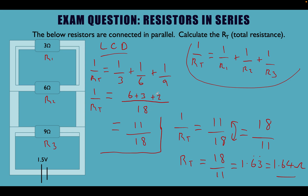We found the lowest common denominator was 18: 9 goes into 18 twice, 6 goes into 18 three times, and 3 goes into 18 six times. So 1 over Rt equals 6 plus 3 plus 2 over 18, which simplifies to 11 over 18, since 6 plus 3 plus 2 equals 11.